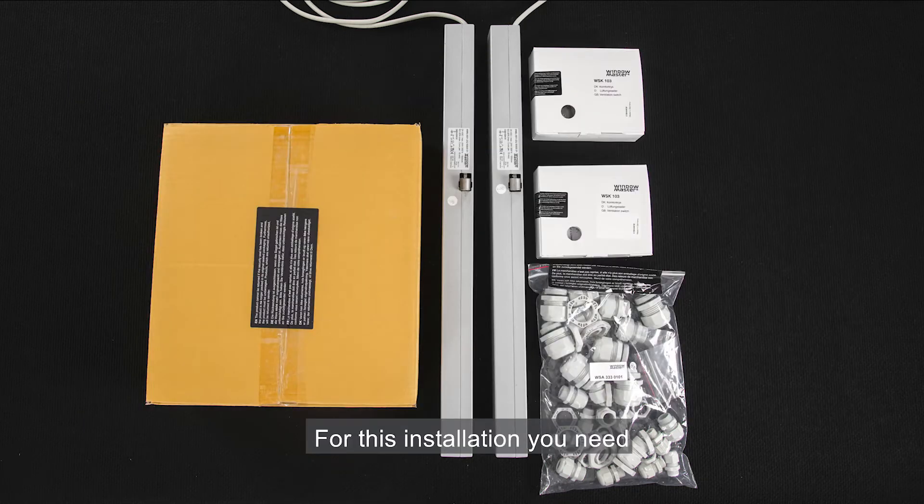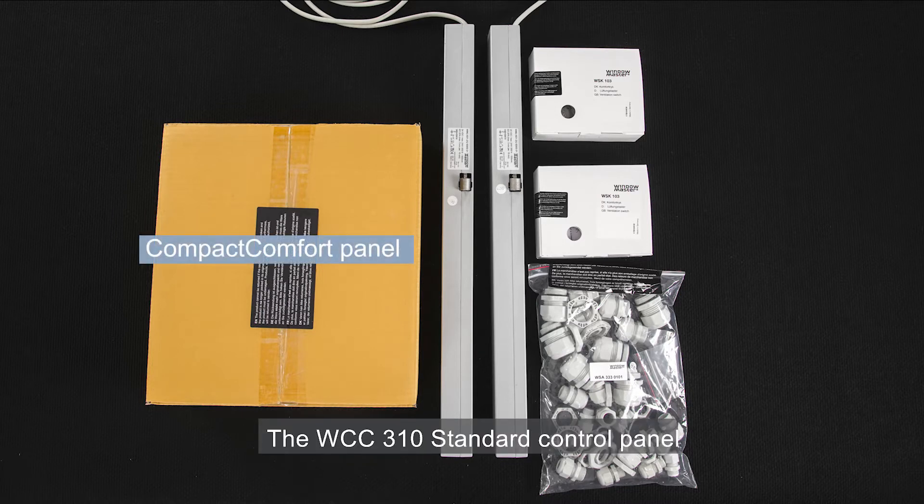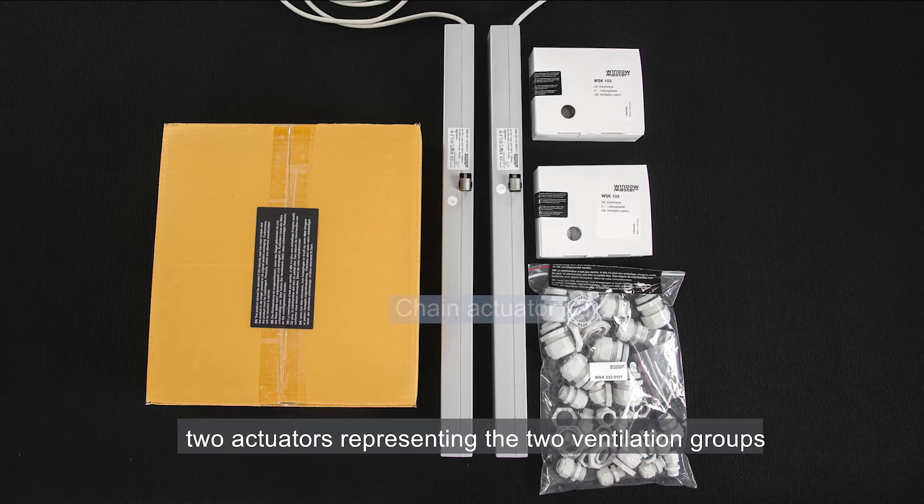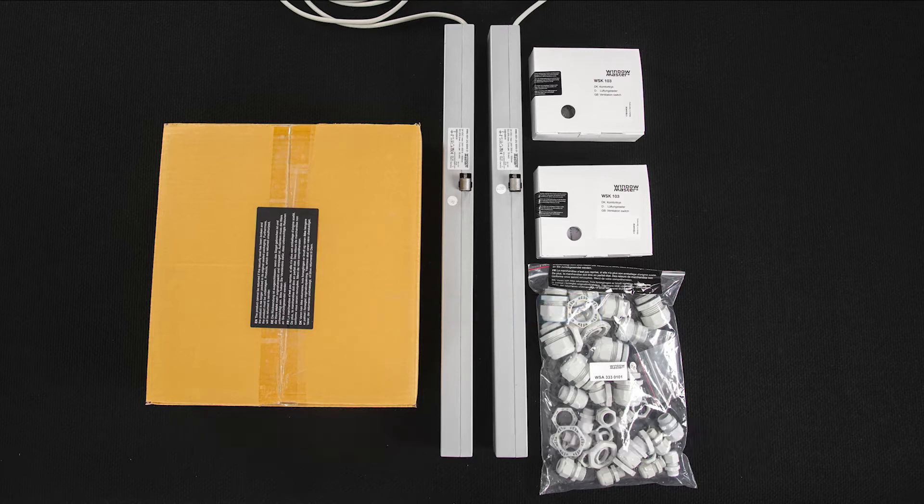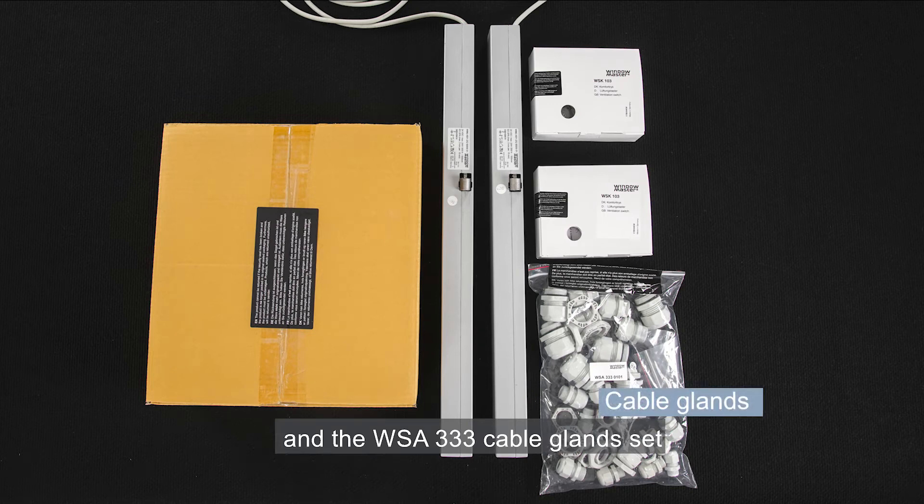For this installation, you need the WCC 310 standard control panel, two actuators representing the two ventilation groups, two WSK 103 manual override switches, and the WSA 333 cable gland set.